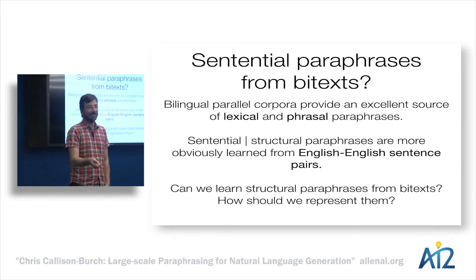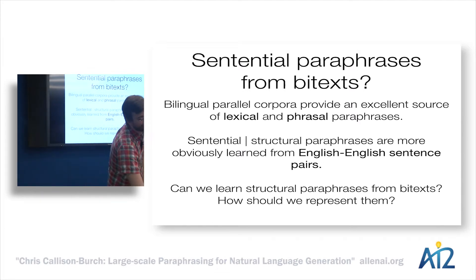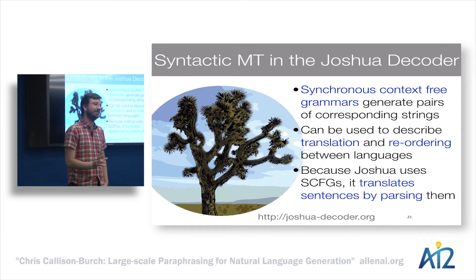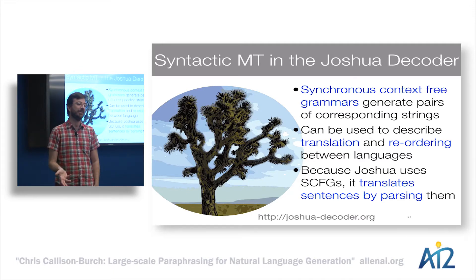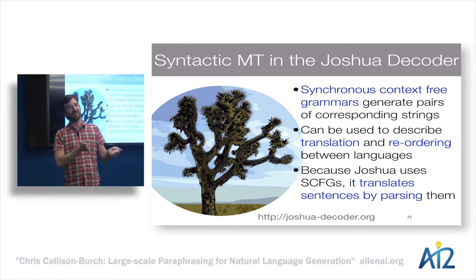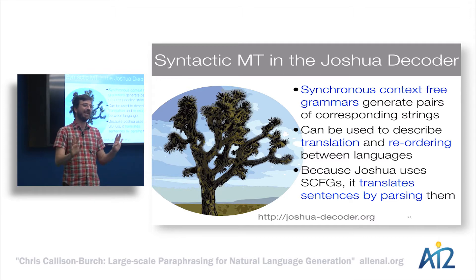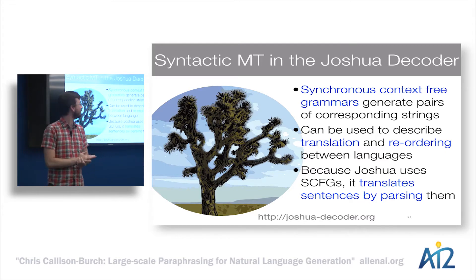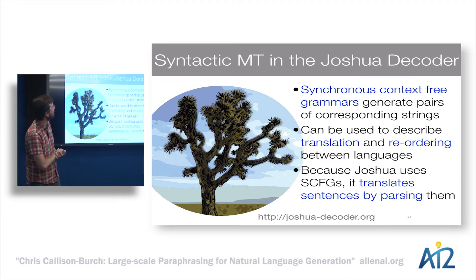I'll now give a five-minute overview of how we currently do statistical machine translation. The recent trend has been towards integrating a lot of syntactic information into our systems. Whereas originally we took it as a great virtue that statistical MT was language-independent and didn't require any syntactic information, we've now dismissed that notion and decided that in order to get high-quality grammatical output, we actually have to pay attention to syntactic information.